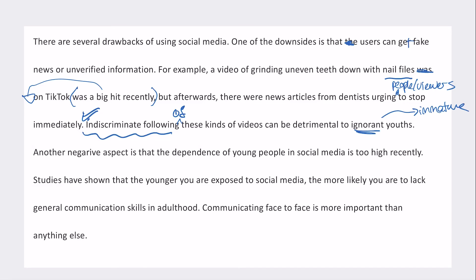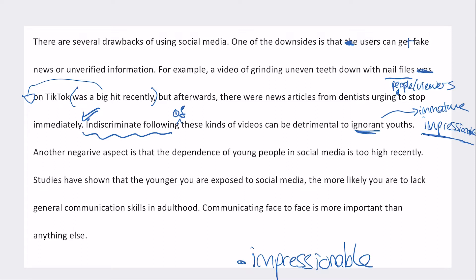However, I wouldn't say 'detrimental to ignorant users' — 'ignorant' is quite strong and negative. A better word would be 'immature' or 'impressionable.' Impressionable means you can easily be led or influenced — it's a negative word but not harshly so. It implies the person is young and easily influenced, which is softer and more appropriate. I'd just want to change that because 'ignorant' feels a little too harsh in this context.